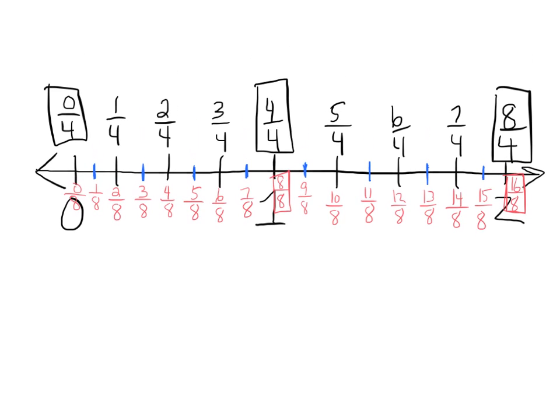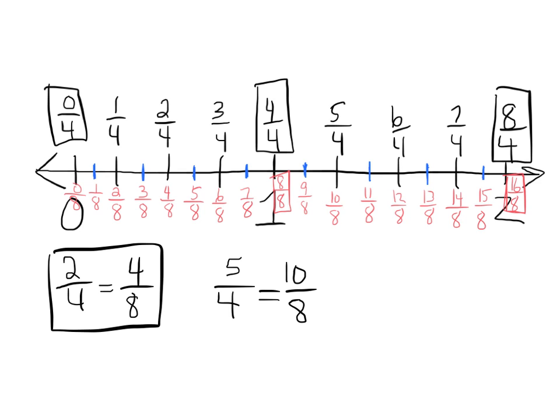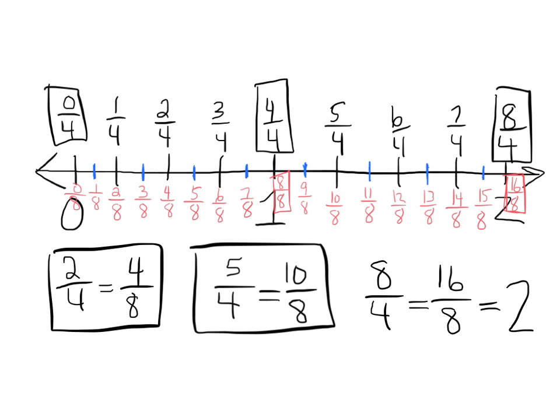And now we can see that we've got some equivalent fractions, so wherever two fractions live at the same location, that means those two fractions are equivalent. For example, 2 4ths and 4 8ths live at the same location, that makes them equivalent. We can see a lot of examples, here's another one right here, 5 4ths and 10 8ths live at the same location, so that means 5 4ths and 10 8ths are equivalent to each other. And of course, we can also see, way over here, 8 4ths and 16 8ths are equivalent, and they're also both equivalent to the number 2.